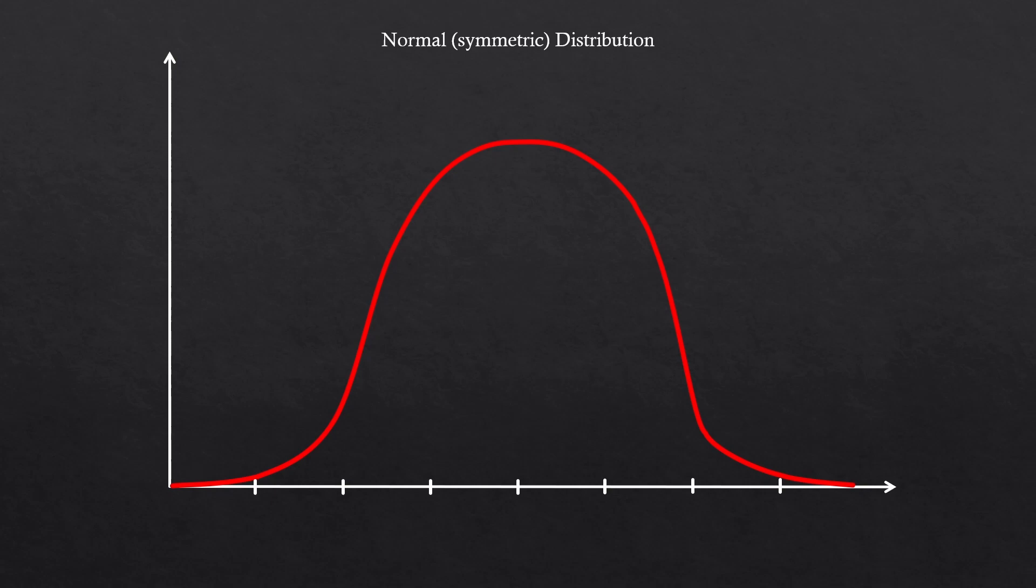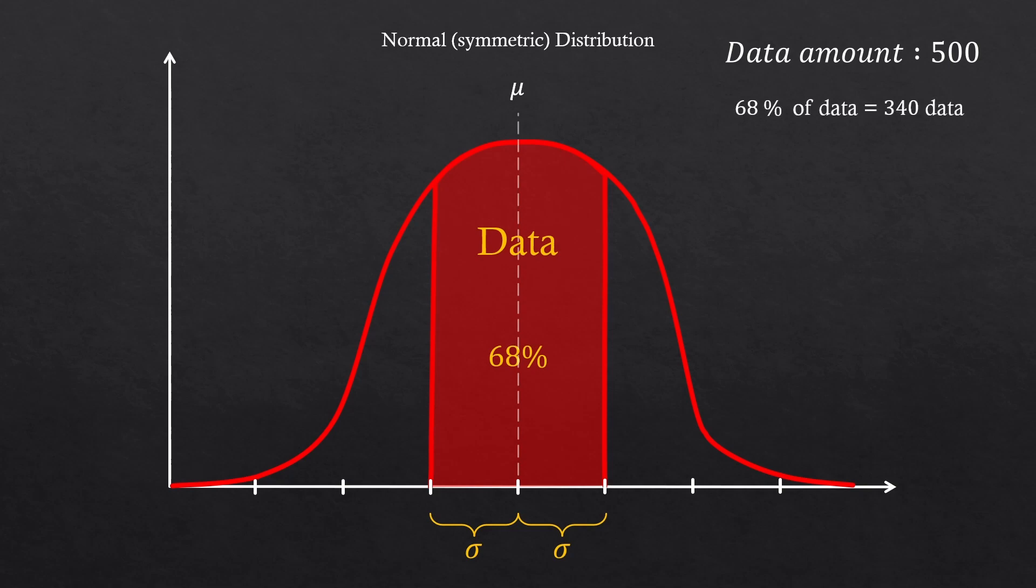There's one crazy thing about standard deviation. Say we have some unknown data that is normally distributed. Say we have 500 data collected on this graph. The average value will of course be at the center. Now, if you expand to the left and right by one standard deviation, you'll notice that you just enclosed 68% of your data in this region. We have 500 data in total, so that's probably about 340 data stacked in this region.